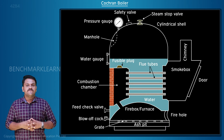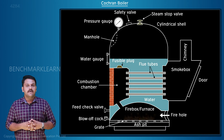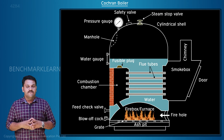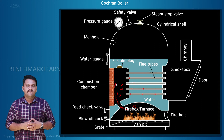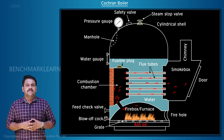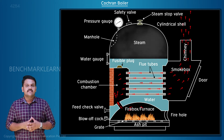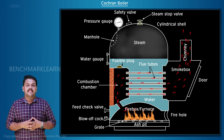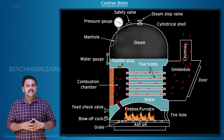Coal is fed onto the grate through the fire hole and burnt. Flames and exhaust gases rise in the furnace. An ash pit is provided below the grate; ash formed is collected in the ash pit and removed at intervals.